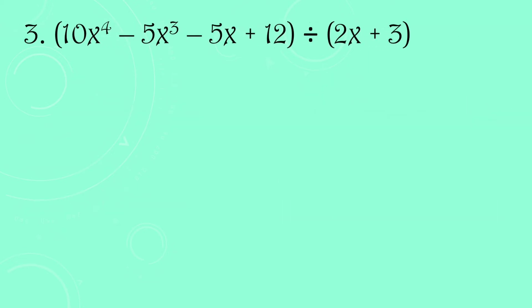Let's have number 3: quantity 10x⁴ − 5x³ − 5x + 12 divided by (2x + 3). What if our divisor has a leading coefficient of 2? In this case, we need to eliminate it — we divide both terms by 2 — so that the leading coefficient of the divisor becomes 1.